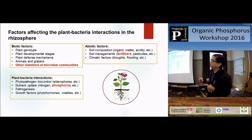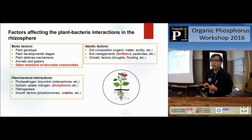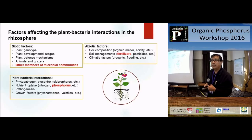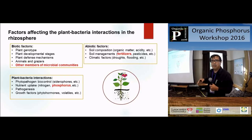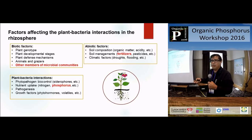In relation to abiotic factors, soil composition, organic matter, acidity - the pH is very important for modulation of the bacterial community. Soil management like fertilizer and pesticide addition also has very strong influence, especially in pesticides because we are focusing on some microorganisms or pathogens. But those chemicals affect all the community, the microbial community. And climate factors - climate change - is another very interesting and fascinating topic about the effect of drought and flood.